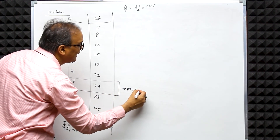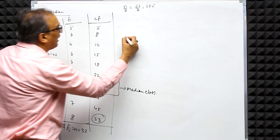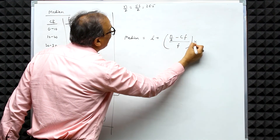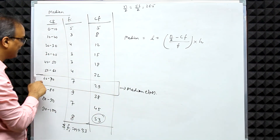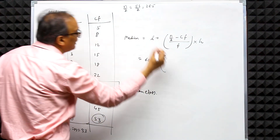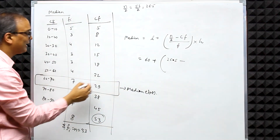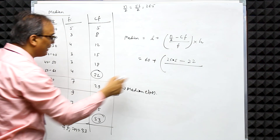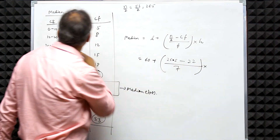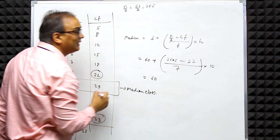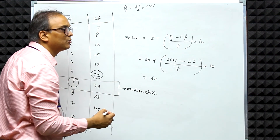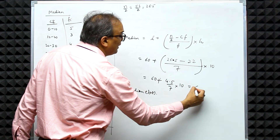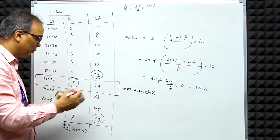The formula for Median is: L + [(n/2 − cf) / f] × h, where L = lower limit of median class = 60, n/2 = 26.5, cf = cumulative frequency of class just before median class = 22, f = frequency of median class = 7, and h = class size = 10. So Median = 60 + [(26.5 − 22) / 7] × 10 = 60 + (4.5/7) × 10 = 60 + 6.4 = 66.4.